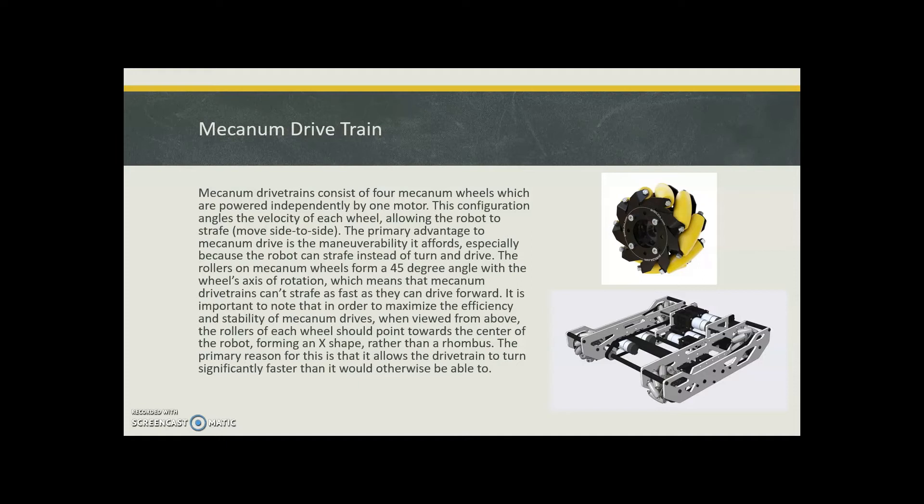The rollers on mecanum wheels form a 45 degree angle with the wheel's axis of rotation, which means that mecanum drive trains can't strafe as fast as they can drive forward. In order to maximize the efficiency and stability of mecanum drives, when viewed from above, the rollers of each wheel should point towards the center of the robot forming an X shape rather than a rhombus.